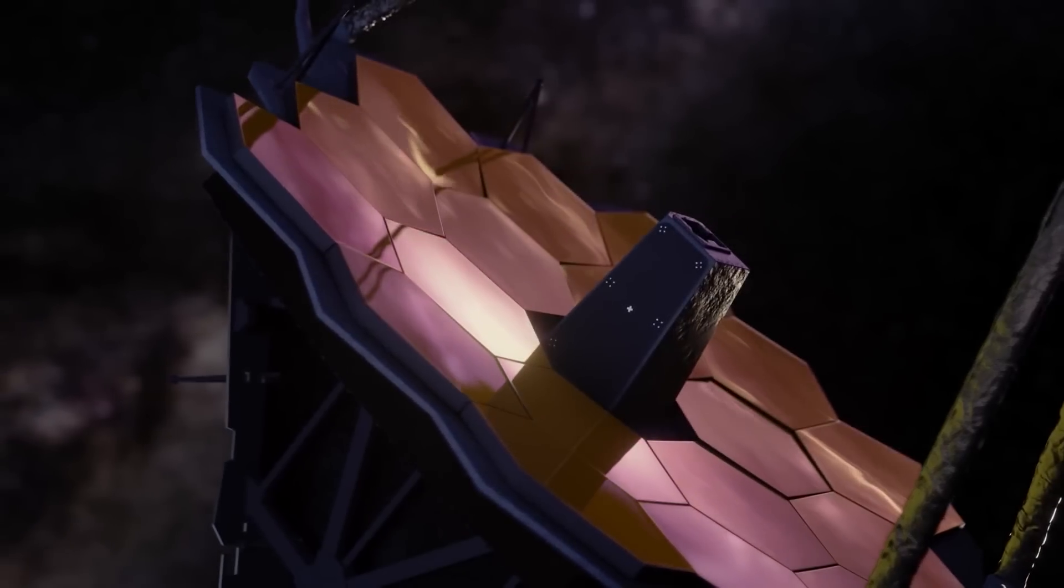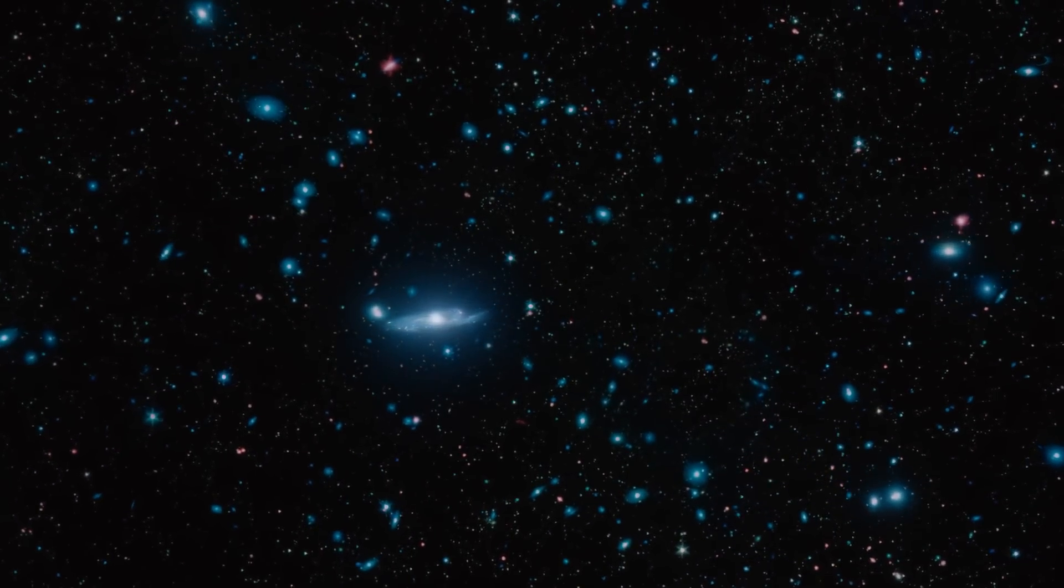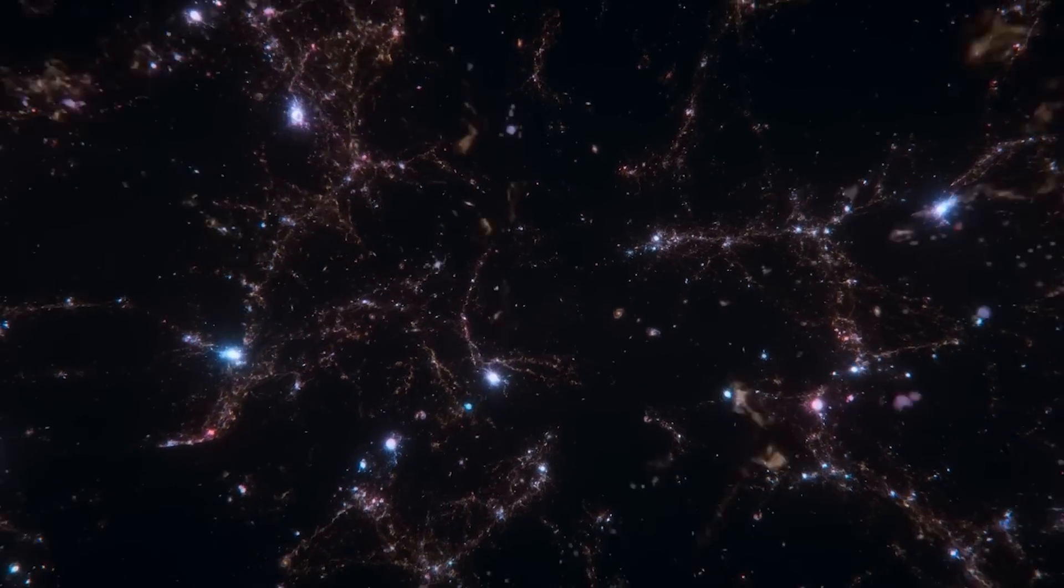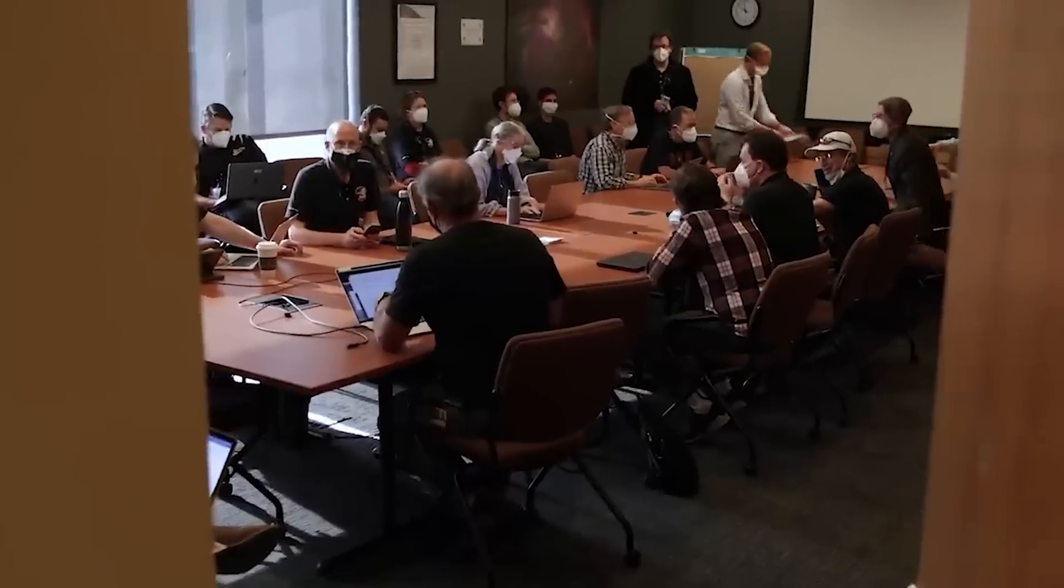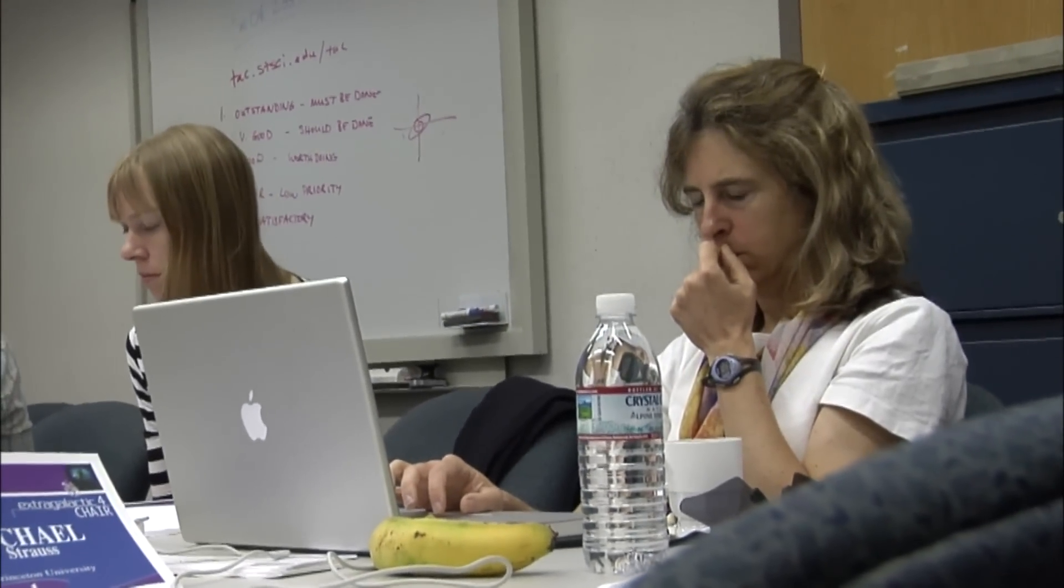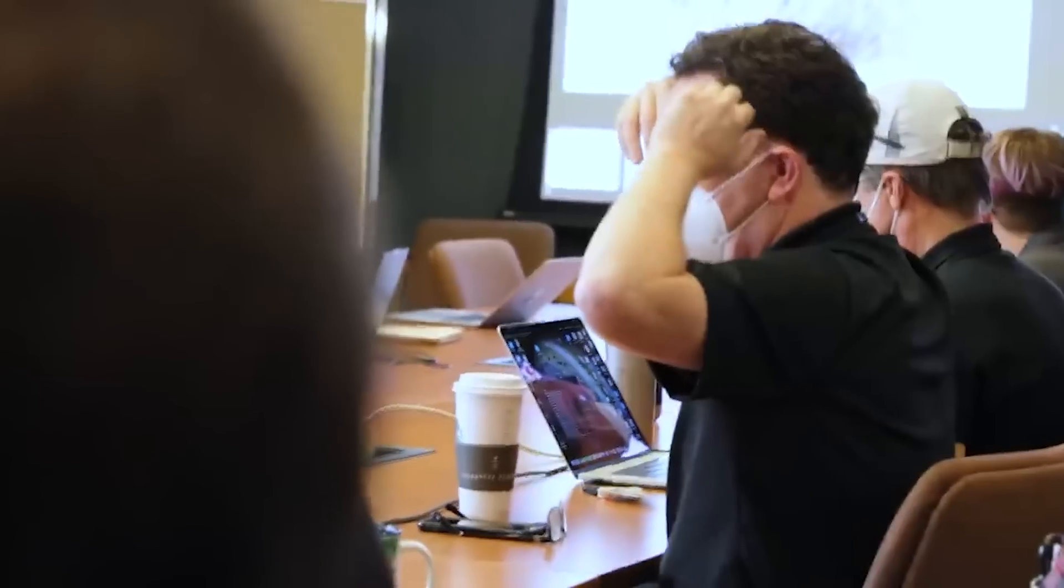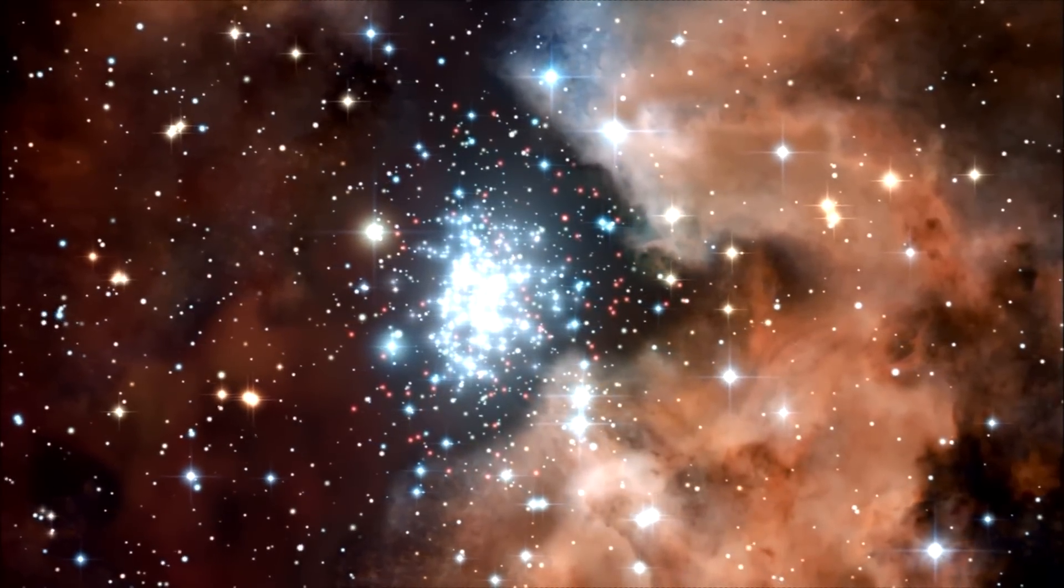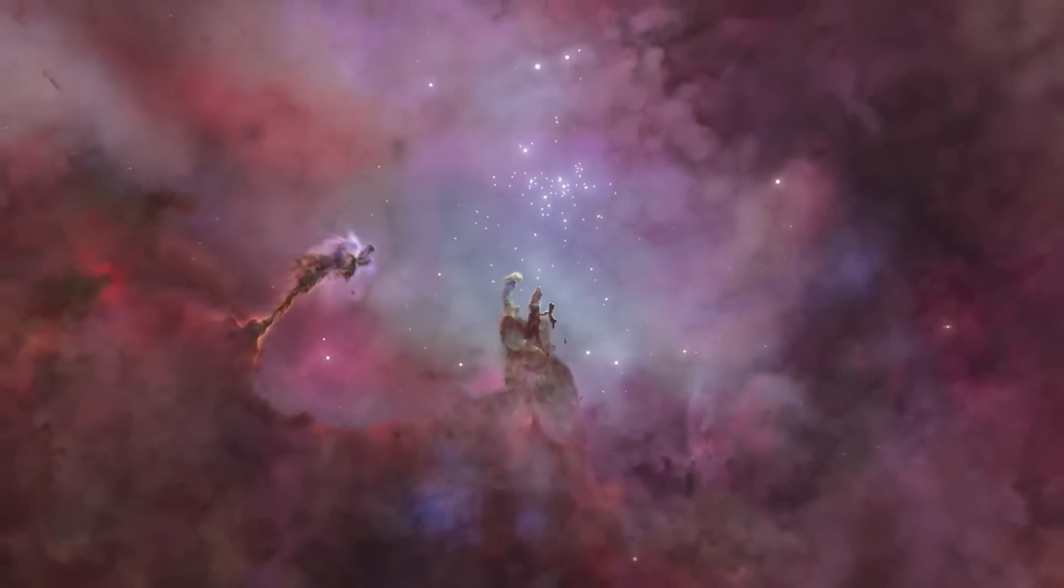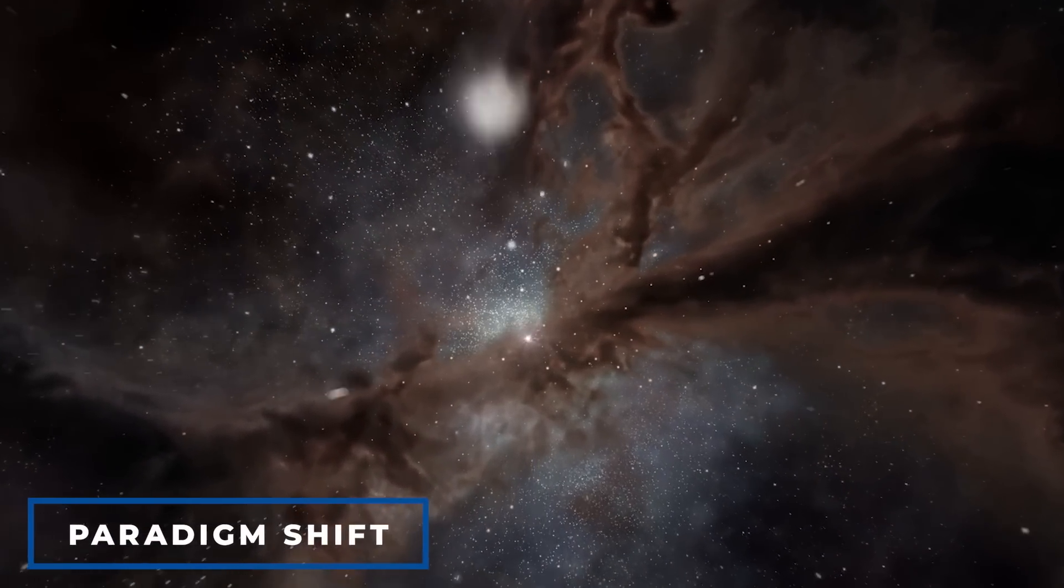However, these discoveries come with a catch. The sheer magnitude and characteristics of these galaxies are defying our current understanding of cosmology. The density of matter and the discrepancy between the amount of normal matter and dark matter in their halos are leaving scientists puzzled and even concerned. The research team has been diligently searching for errors in their work, but the data and their interpretations remain solid. The idea of rewriting all the history books is a daunting one, and researchers are grappling with the possibility that our knowledge of the universe may have been way off the mark. Could it be that we made a human error in our calculations, or are we on the cusp of a major paradigm shift in our understanding of the cosmos?